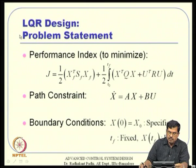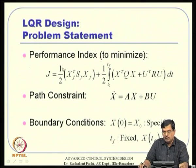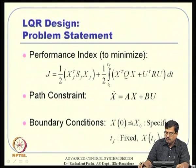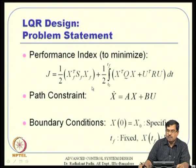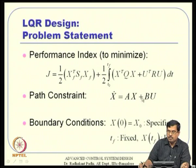Another alternative studied before is LQR — Linear Quadratic Regulator design — where we use a quadratic performance index containing a terminal penalty and a path penalty. The path constraint is the linear system dynamics; the initial condition is known, final time is fixed but the final state is free. We formulate an augmented cost function J-bar, which is J plus the integral of lambda-transpose times (x-dot - Ax + Bu), define the Hamiltonian, and carry out further algebra.